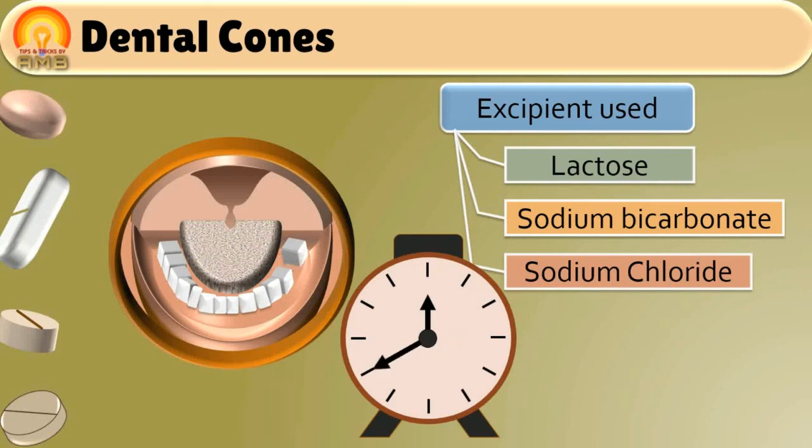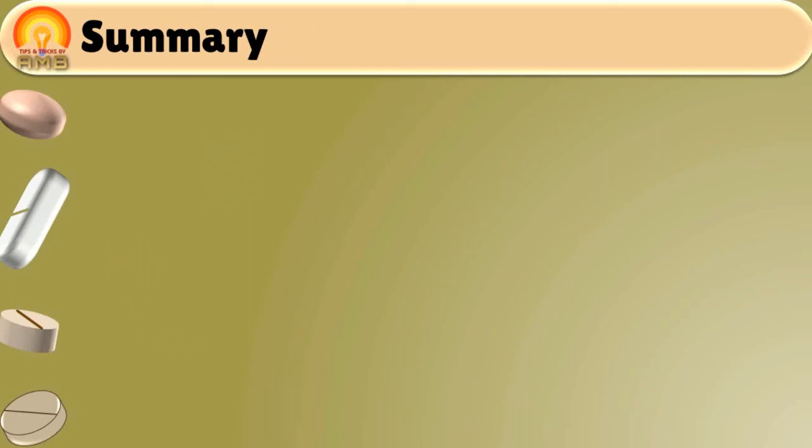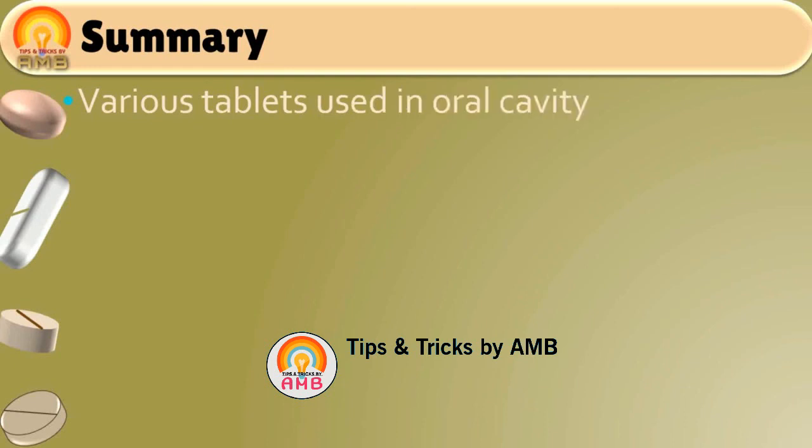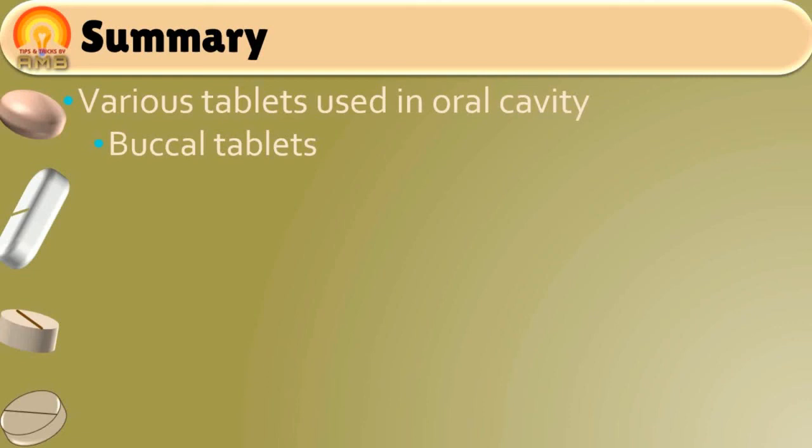Now it's time to summarize today's session. We had discussed various tablets used in oral cavity in details like buccal tablets which are to be kept in mouth cavity between gums and cheeks for local or systemic effects, and sublingual tablets which are kept below the tongue for rapid absorption of drug and to achieve rapid effect.